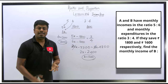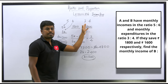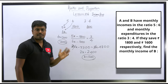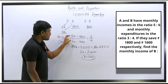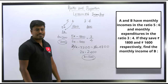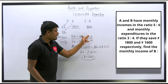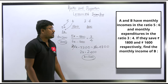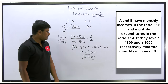If the question gives income values and asks for expenditure, write the expenditure ratios as the unknown variable. If it asks for income, write income as 5x and 6x. The approach adapts based on what you need to find. The monthly income of person B is ₹7,200.